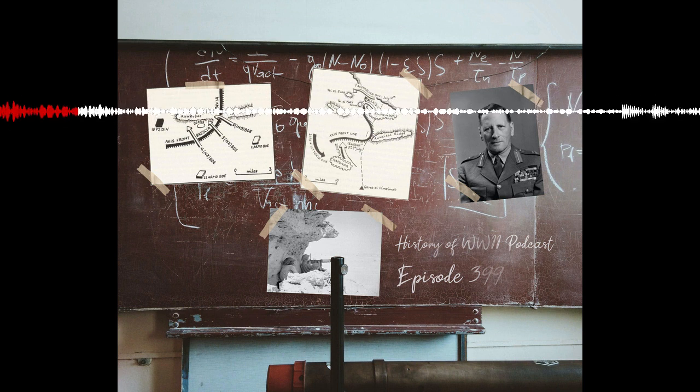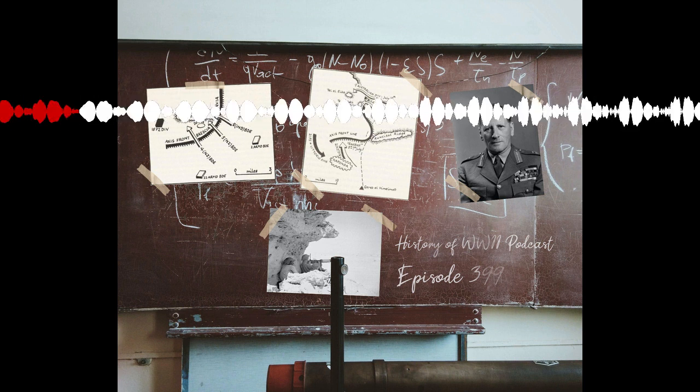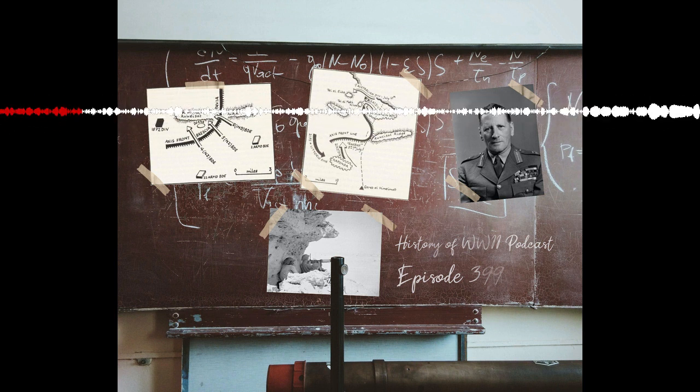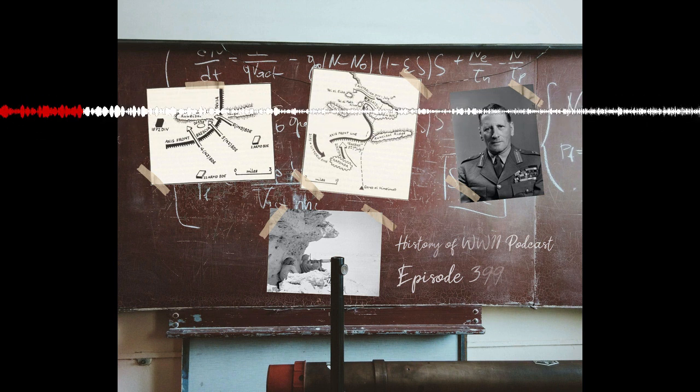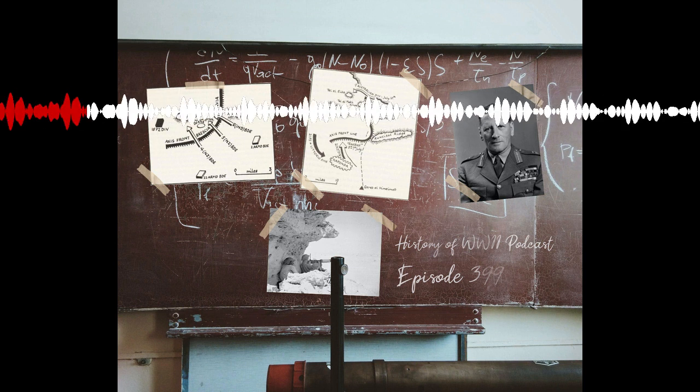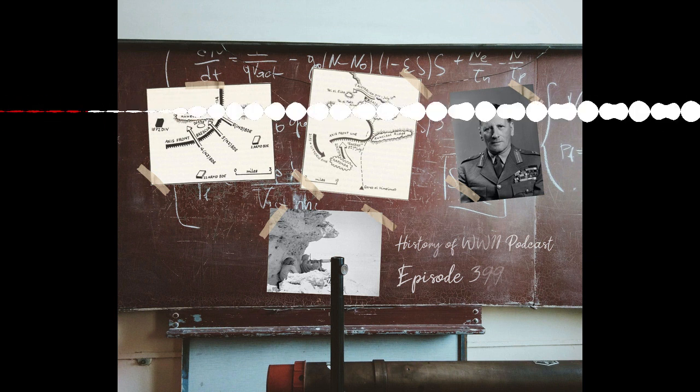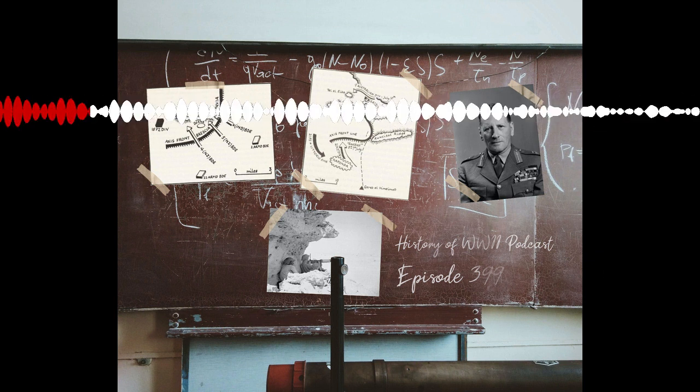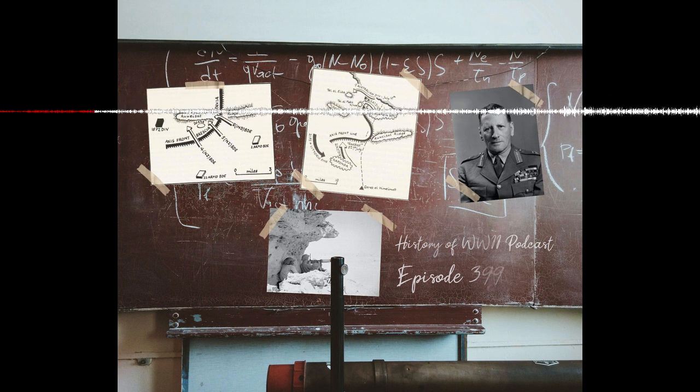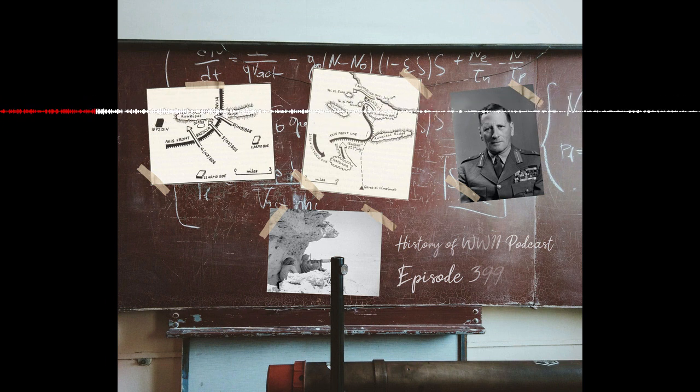Alas, for Auchinleck, General Gott did not have any reserves, so near the end of July 2nd, though the New Zealanders had made a hole, there was nothing left to feed into it. Thus, Rommel's supply lines had been saved. But the Axis General had no intention of simply waiting behind his lines for reinforcements. He would lay the groundwork by doing what he did best: find a chink in the enemy's armor and exploit it.